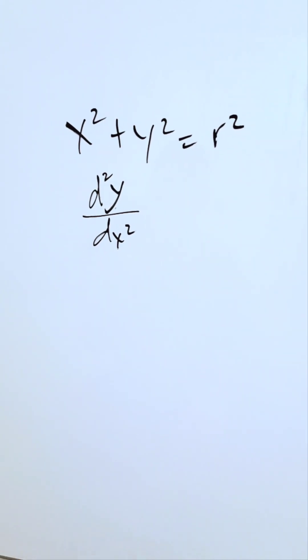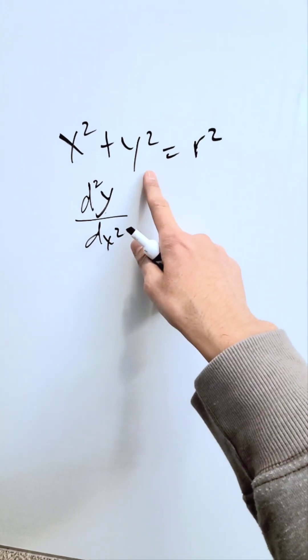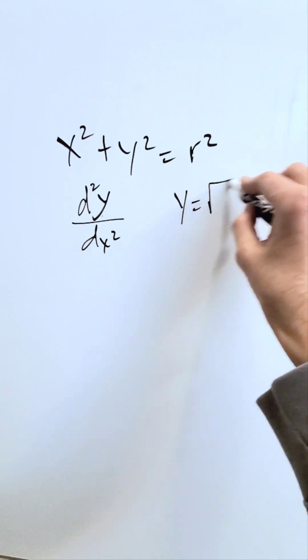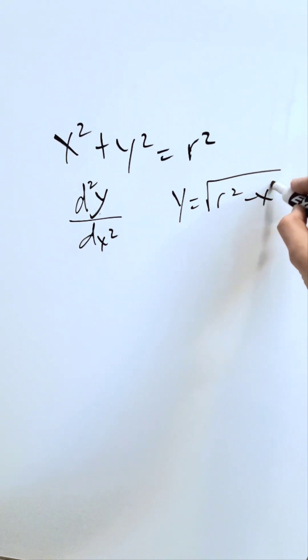We are interested in the second order derivative. Now look, when you're looking at this, you're solving for y. You have here a function: y equals the square root of r squared minus x squared.